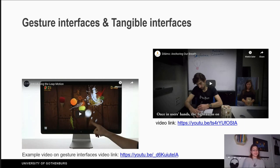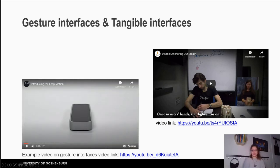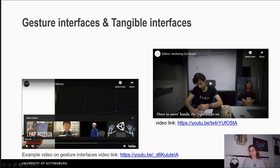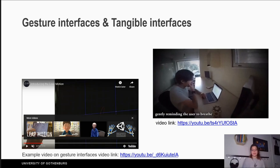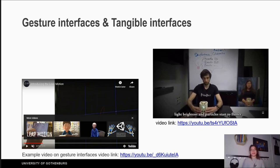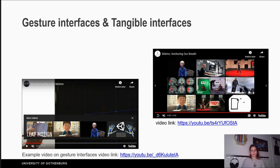Gestures and tangible interfaces. In this video we can see Leap — a small device that you put in front of your screen and then you can start controlling your computer using gestures. However, gestures are not socially acceptable in all cultures. Tangible interfaces: in this video you can see Dissimo, a wooden machine that makes a sound when a person touches it. The other person also touches the machine, and when their breathing is aligned, things inside the wooden box start moving. Feel free to watch the video by clicking the link in the description.